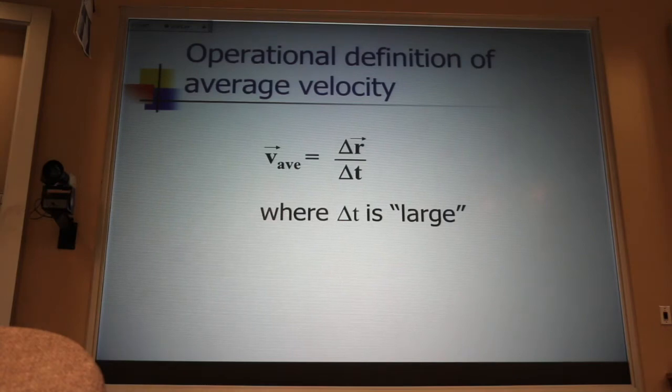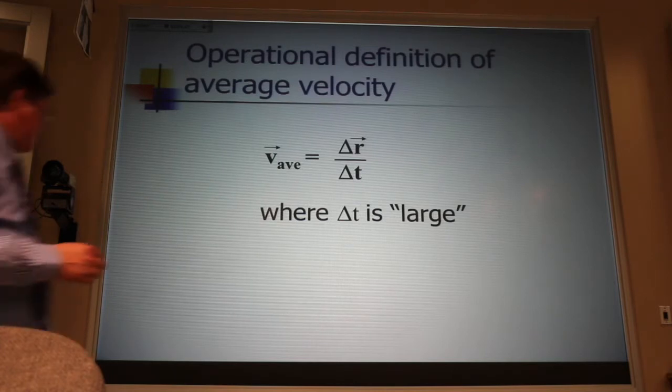It's just the total distance divided by the total time. Now, this is the kind of velocity you want to use when you're trying to figure out how long it's going to take to get to Denver. You don't want your fastest speed or your slowest speed. You want your average speed.